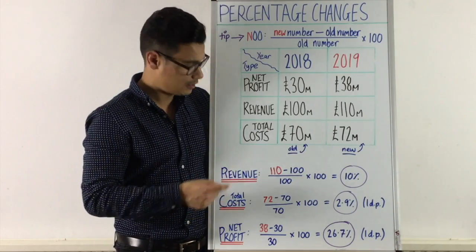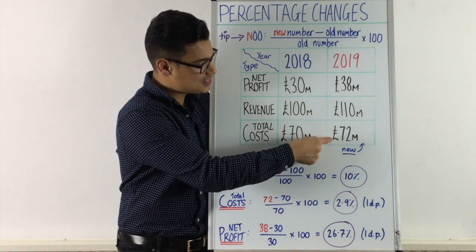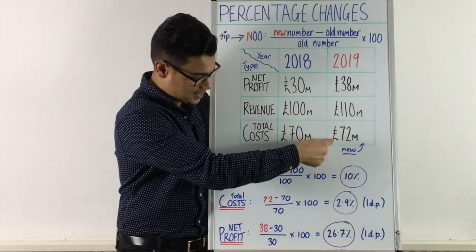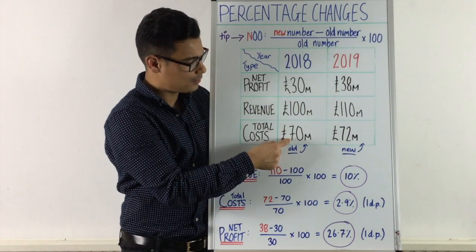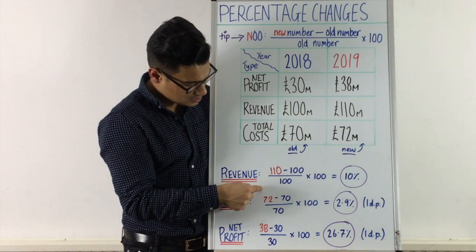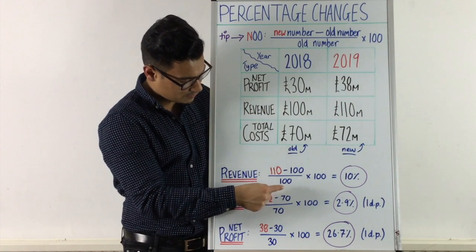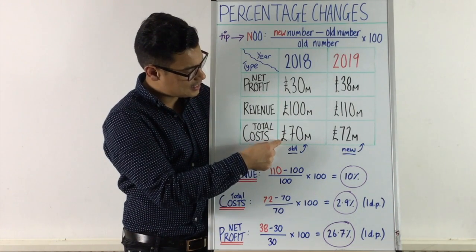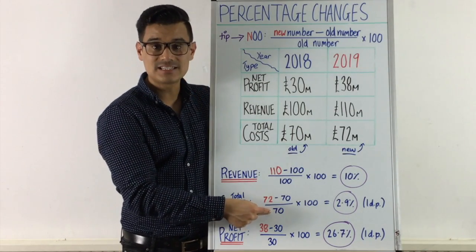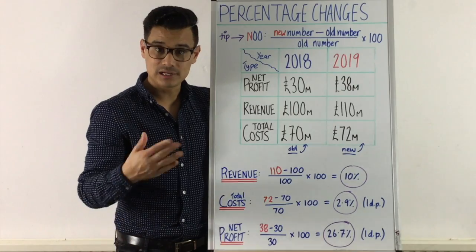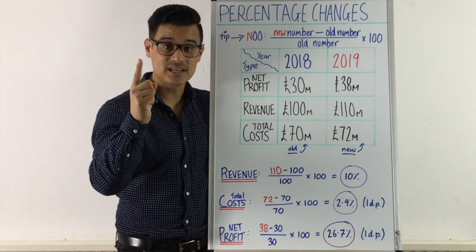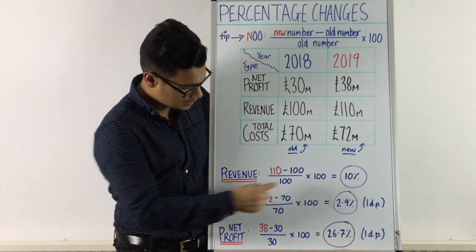Remember NUUU. We take the new number for total costs — that's going to be 72 million because that is 2019. Then we minus off the old number, which is the previous year, 70 million. So 72 minus 70, divided by the old number 70, times by 100. Get a calculator and you'll find that it comes to 2.9% — to one decimal place.